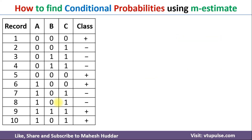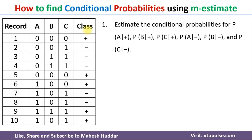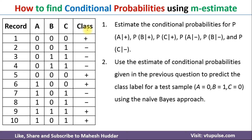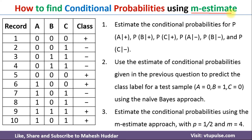In this case, we have been given a dataset with the three attributes A, B, and C. Class is the target variable. First, we need to calculate the conditional probabilities and then we can classify the new example into one of the classes using these conditional probabilities. Later, I will discuss how to use the M-estimate approach to find the conditional probabilities and classify this example into one of the classes.